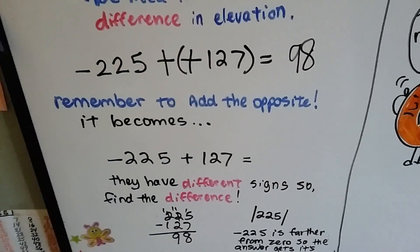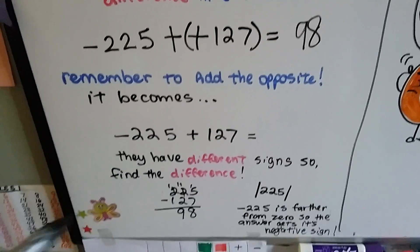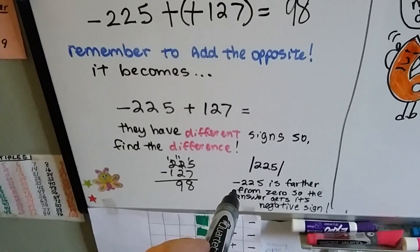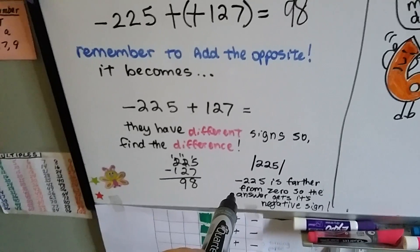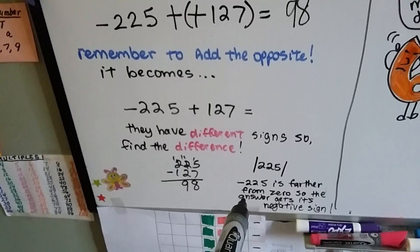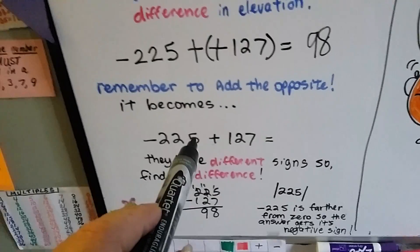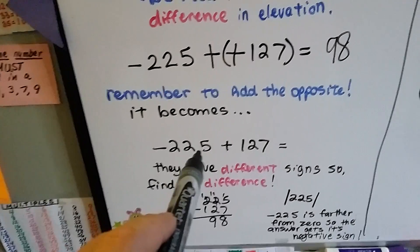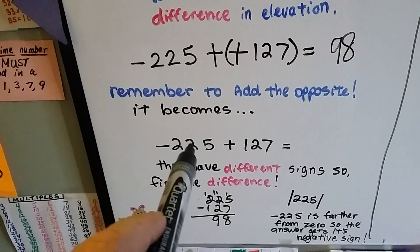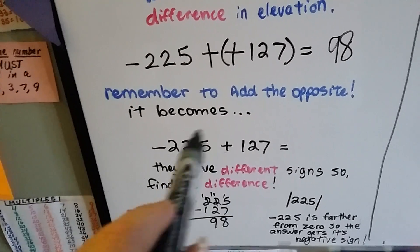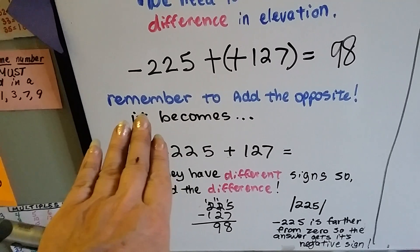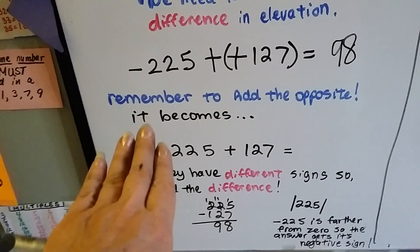But what sign do we use? Is it positive or negative? Remember, the 225 is farther from the zero, so the answer gets its negative sign. We look at the absolute value of the 225 and the 127 and say which one is farther from zero. It doesn't matter if it's a negative or positive. Just which one's farther from zero.